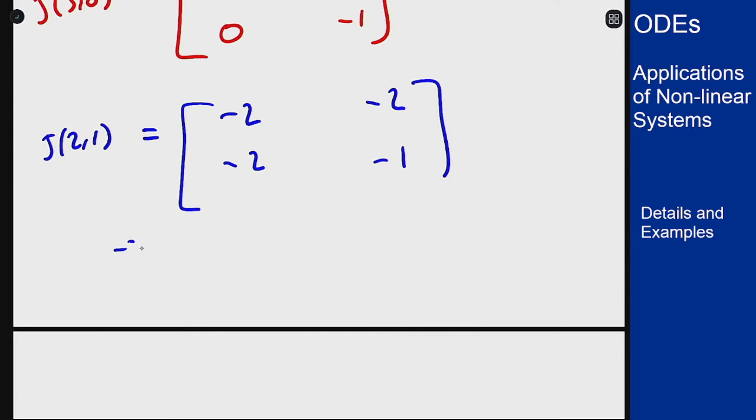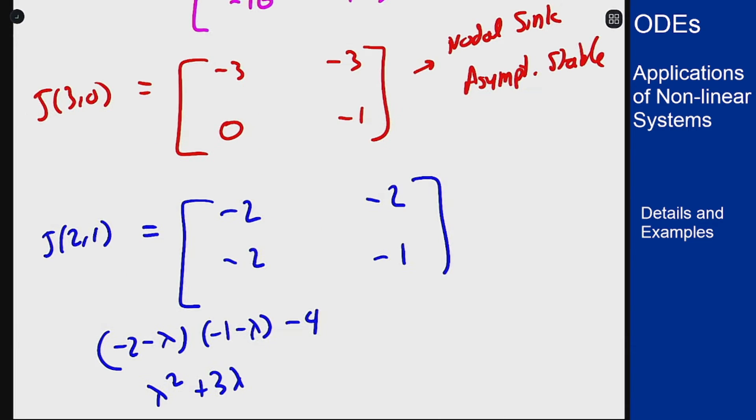This comes out to be negative 2 minus lambda, negative 1 minus lambda minus 4 because that's 3 negative signs. The lambda squared plus lambda plus 2 lambda is plus 3 lambda plus 2 minus 4 so it's lambda squared plus 3 lambda minus 2. That's not going to factor but I can find the eigenvalues with the quadratic formula which tells me that lambda equals negative 3 plus or minus the square root of 9 plus 4ac is 8 over 2. That's going to be a saddle because those are going to have opposite signs so it's going to be unstable.